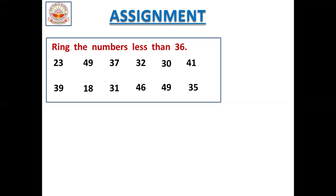Now 30 — 30 is a small number compared to 36, so we should circle it. Now 41 — 41 is a big number compared to 36, so we should not circle it. Now 39 — 39 is a big number compared to 36, so we should not circle it. 18 — 18 is a small number compared to 36, so we should circle it. Now 31 — 31 is a small number compared to 36, so we should circle it. Now 46 — 46 is a big number compared to 36, so we should not circle it. 49 is also a big number compared to 36, so we should not circle it.